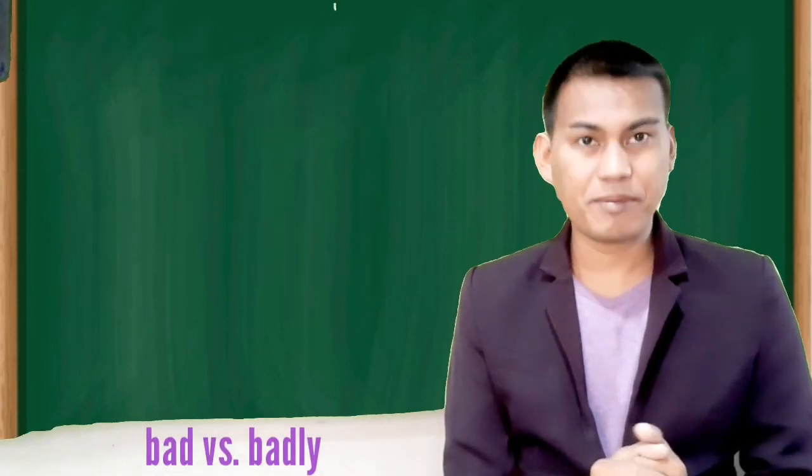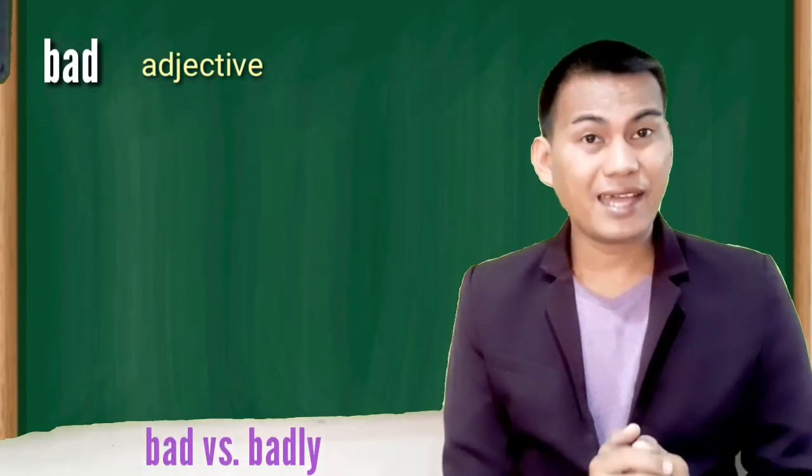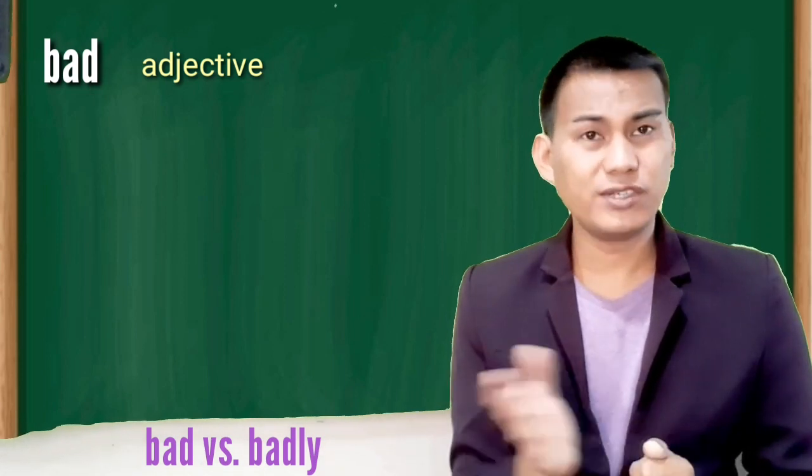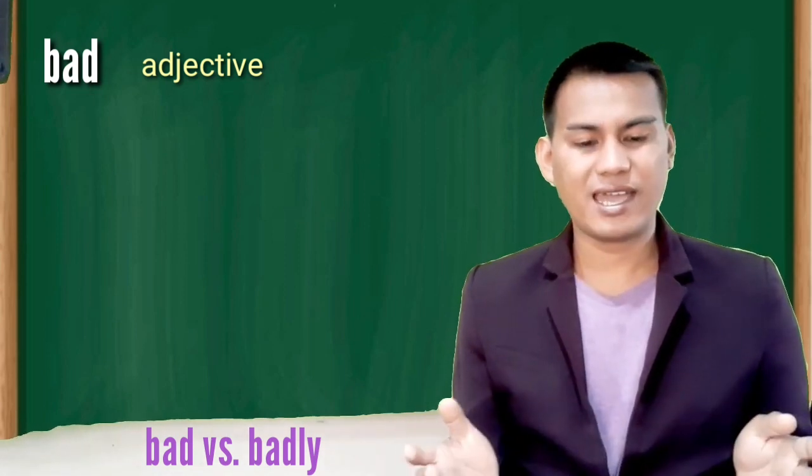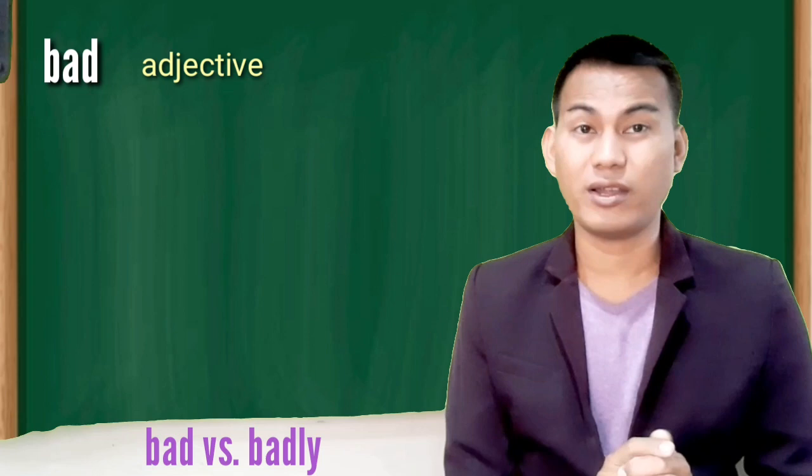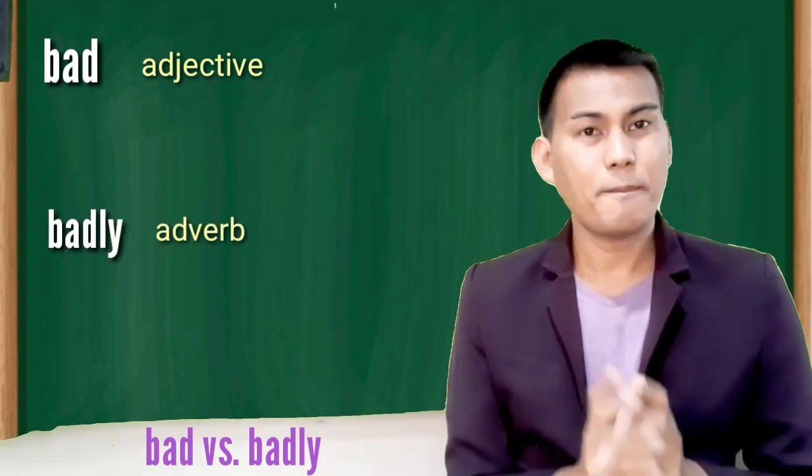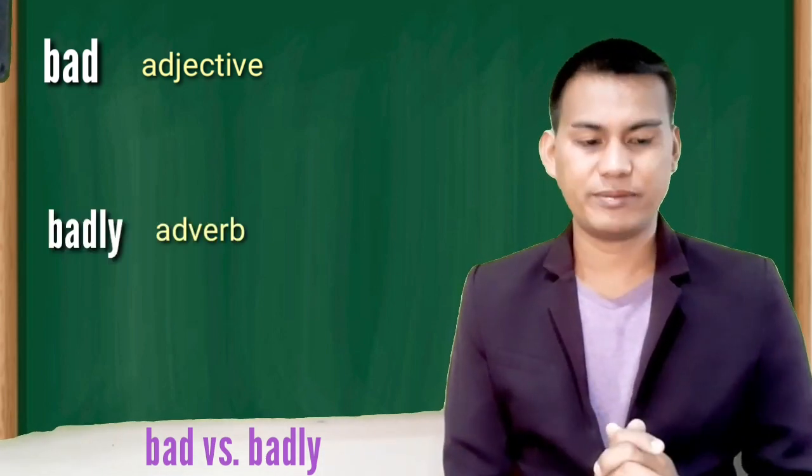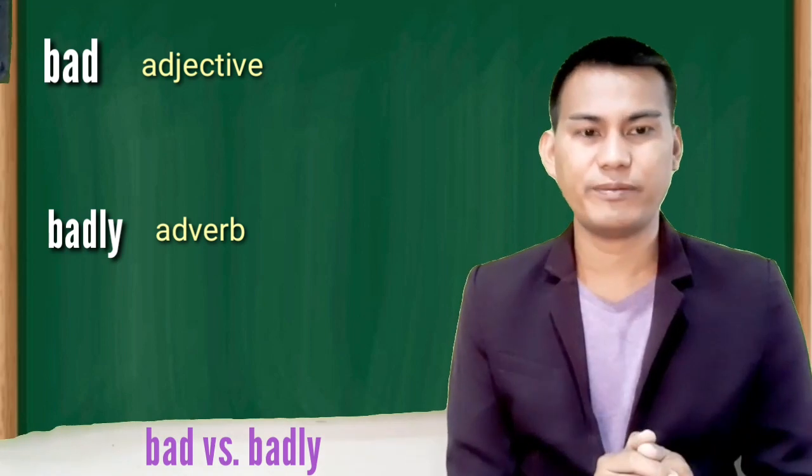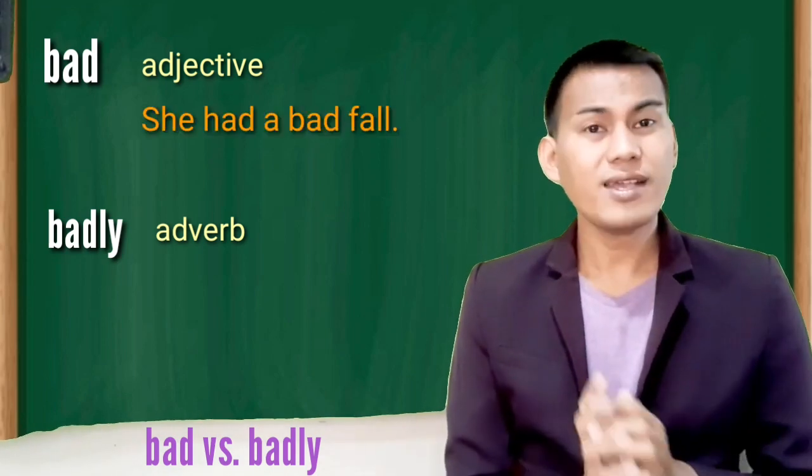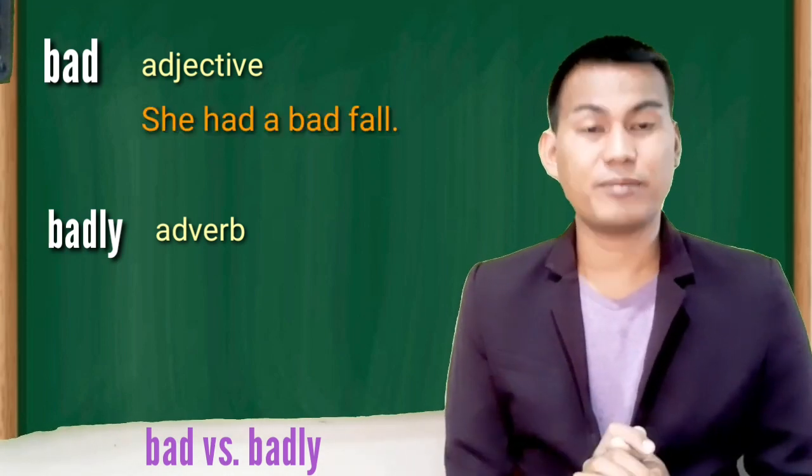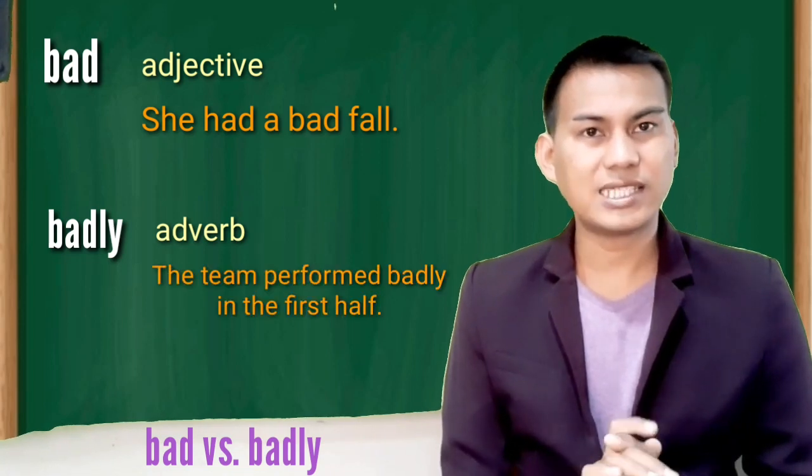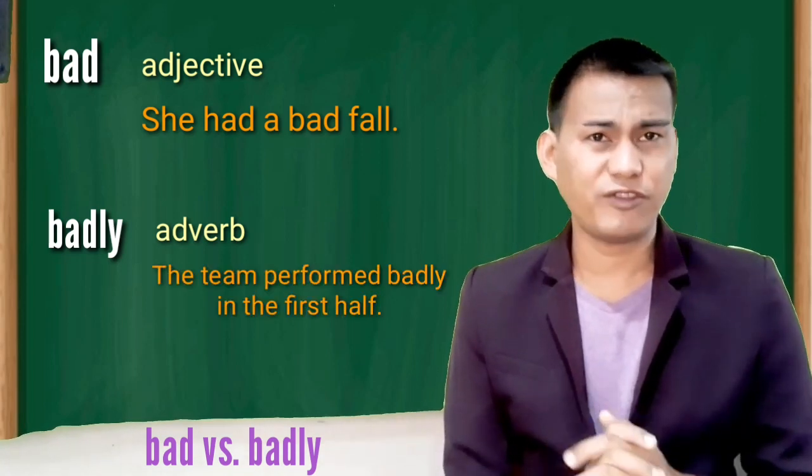Bad versus badly. Bad is an adjective. Use it before nouns and after linking verbs to modify the subject. Badly is an adverb. Use it to modify action verbs or action words. She had a bad fall. The team performed badly in the first half.